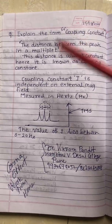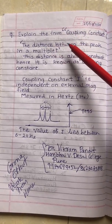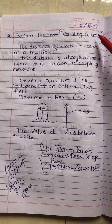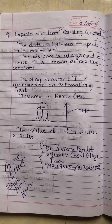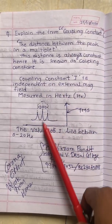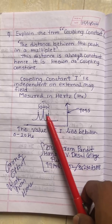Hello everyone, this is the next question from the NMR topic: explain the term coupling constant. This question can be asked for two to three marks. Coupling constant is the distance between the peaks in a multiplet.